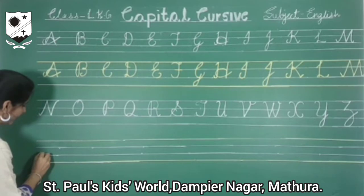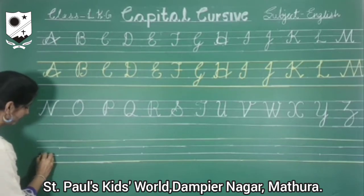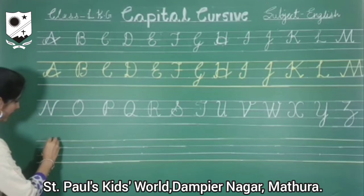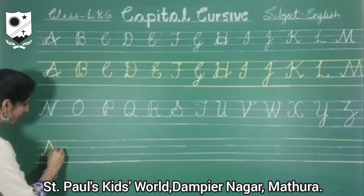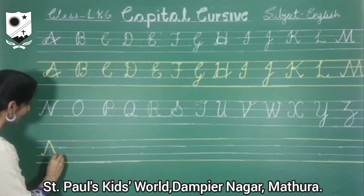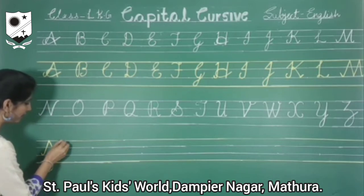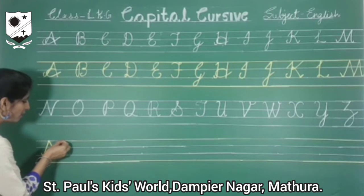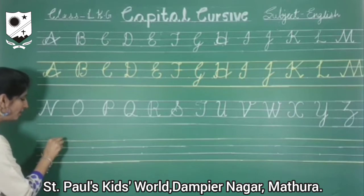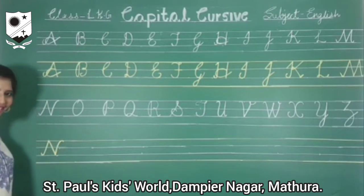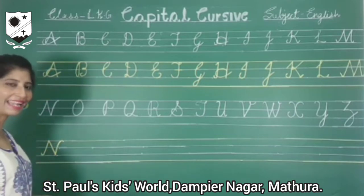We will start from the third line. Pick a small curve. Slanting line. Again, slanting line. And go up towards the third line. More round. Leave it. Capital M.